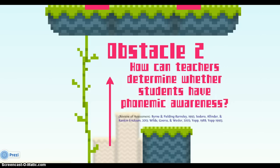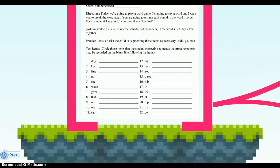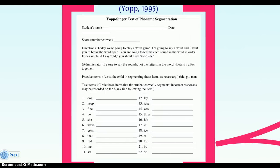How can teachers determine whether students have phonemic awareness? One way is to use the Yopp-Singer Assessment Tool, shown here. This is designed to be used with English-speaking kindergartners. It is individually administered and requires about 5 to 10 minutes to complete. This assessment tool measures a child's ability to separate words into their individual sounds.